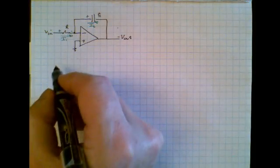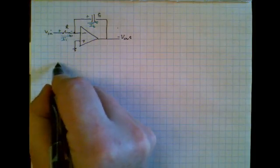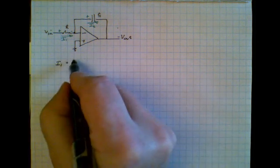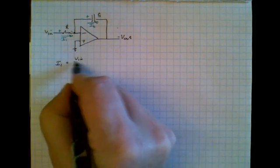The value of I1 is very easy to determine. I1 is simply equal to Vin divided by R.